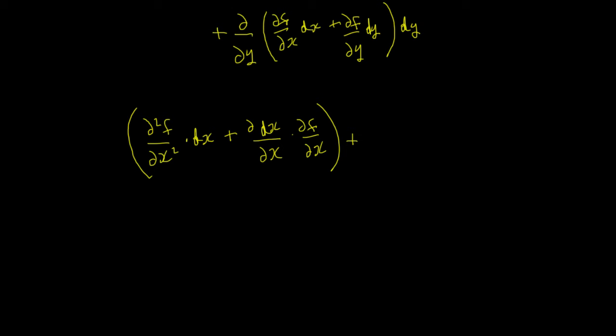Plus, now we'll do this one here. So you're going to have partial squared F upon partial X partial Y times DX plus, and we'll differentiate that one. So we'll have partial DY upon partial X times partial F by partial Y.